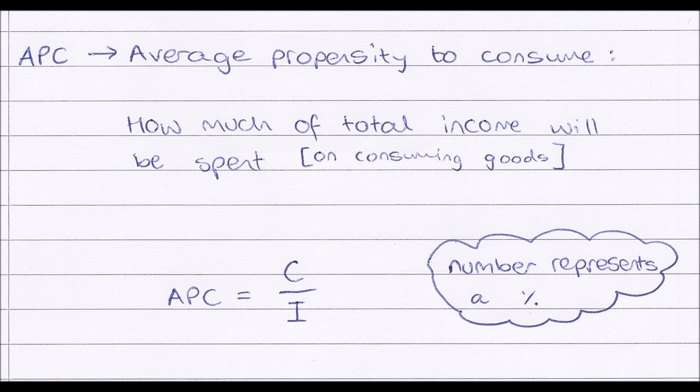So C consumption, the amount we spend, and I income, the amount we're getting in. Our APC number represents a percentage number. So for example, if our APC were to be 0.7, if I worked out my consumption and income and put them into the formula and my number was 0.7, this would represent that 70% of my income is being spent on consuming goods.